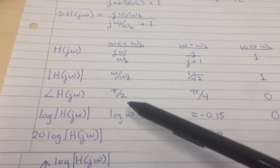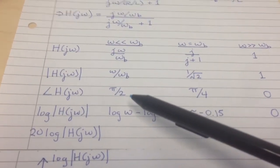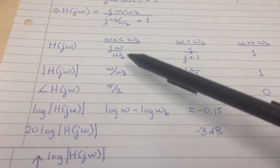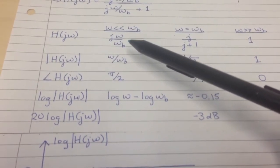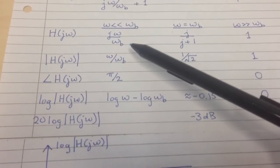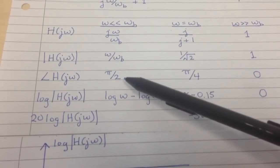The argument of H tells us the phase shift between the output and the input. Here, the phase shift is going to be the argument of that complex number. j is just on the imaginary axis of the complex plane, so its phase is pi over 2.